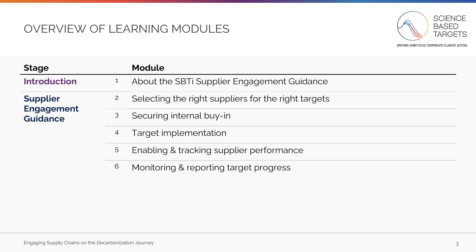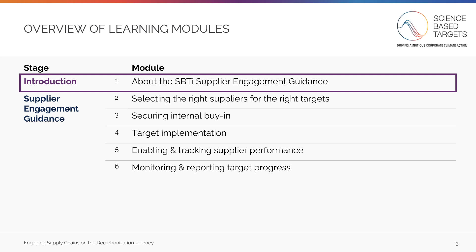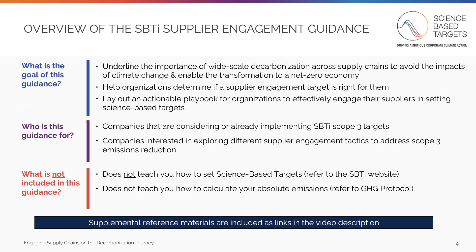The guidance will be presented over six learning modules. We are currently in the first module. Subsequent modules will cover five key steps in the supplier engagement guidance. Each module is covered by a separate video so that you can easily navigate the training to meet your needs.